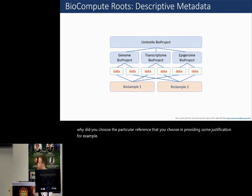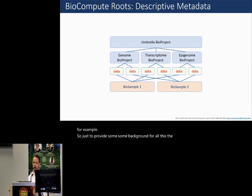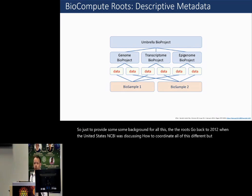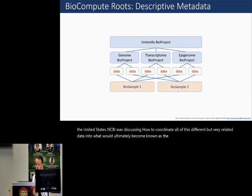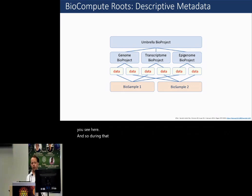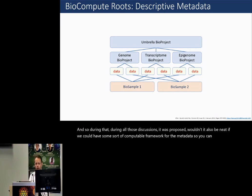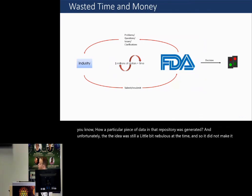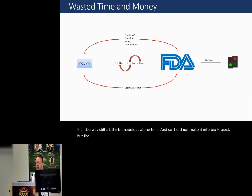So just to provide some background for all this, the roots go back to 2012 when the United States NCBI was discussing how to coordinate all of this different but very related data into what would ultimately become known as the BioProject, which is the data model you see here. And so during all those discussions, it was proposed, wouldn't it also be neat if we could have some sort of computable framework for the metadata so you could understand how a particular piece of data in that repository was generated? And unfortunately, the idea was still a little bit nebulous at the time. And so it did not make it into BioProject, but the seed had kind of been planted.